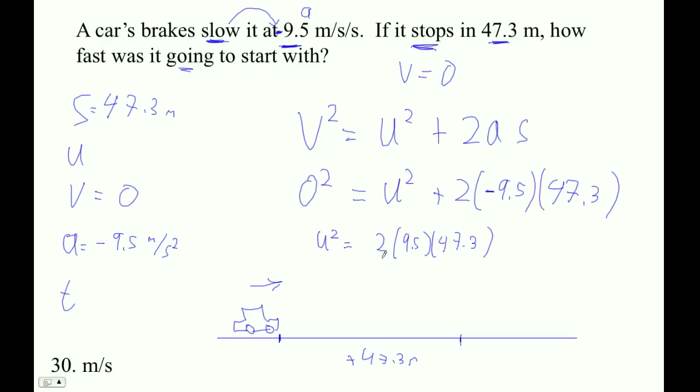Okay, so let's go square root of 2 times 9.5 times 47.3 in parentheses. And I get 29.978 meters per second. And I guess with two sig figs, we have to round it to there. And that's why it's 30 with a decimal point to say that we really mean the zero, right?